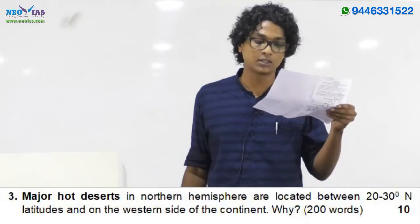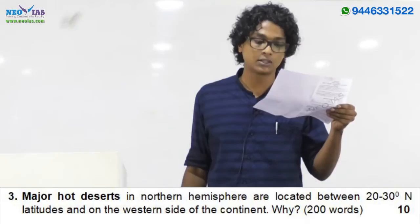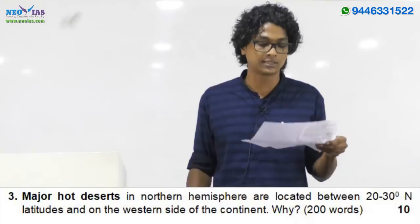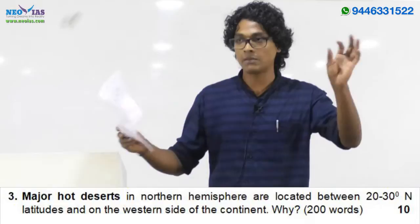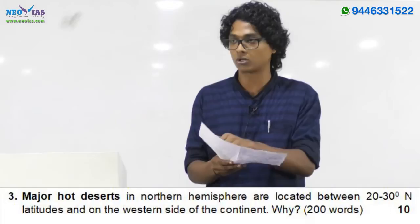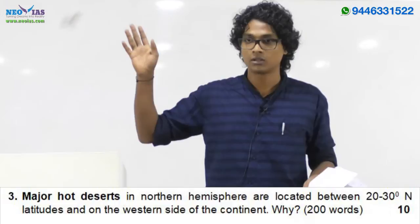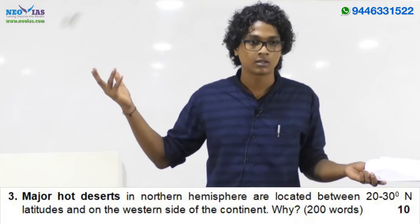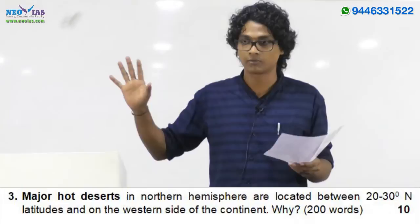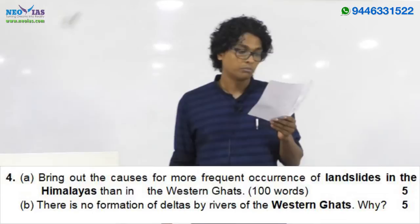The 2013 third question: 'Major hot deserts in the northern hemisphere are located between 20 to 30 degrees north latitude and on the western side of the continent.' You already know the answer from climatology studied for prelims. You should be able to write within 200 words explaining the key points — cold currents, trade winds, easterlies, subsidence — things like that.